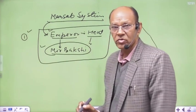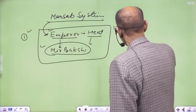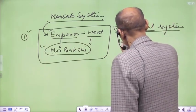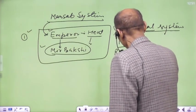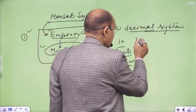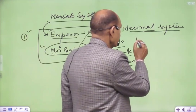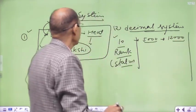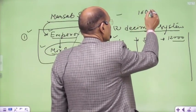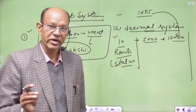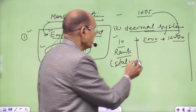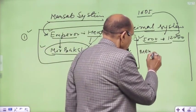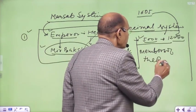This is my second important point. Mansabs were allotted in the format of the decimal system, meaning in the multiples of 10. The basic Mansab or rank was 10, and initially the ranks were given up to 5,000 and then further up to 12,000. In the end phase of Akbar, the ranks of 5,000 and beyond were reserved for the members of the royal family.